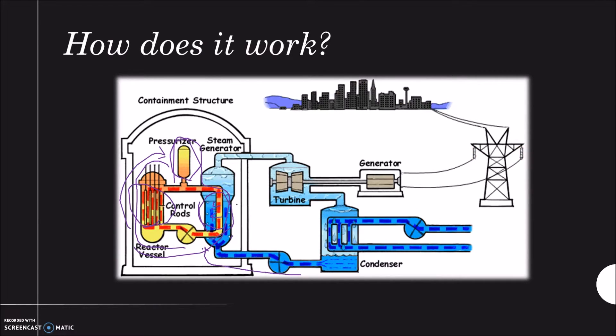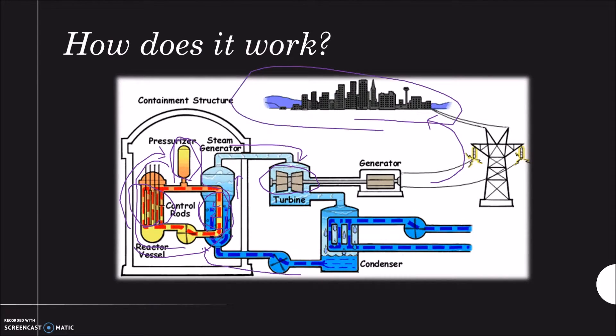Then the water boils and turns into steam, which goes in that direction and rotates this turbine. The rotation of the turbine produces electrical current, which is then used for powering human cities.